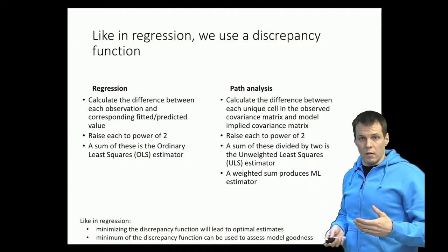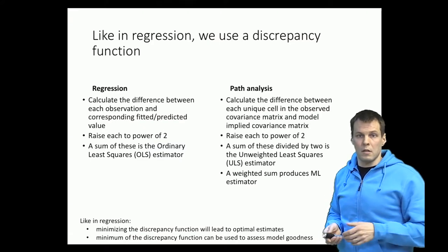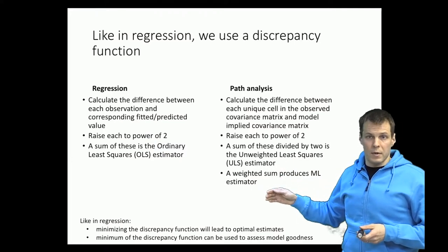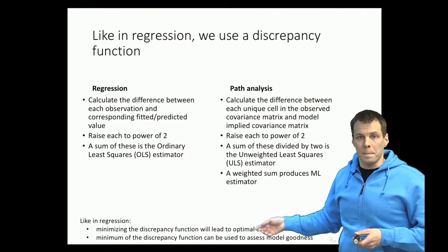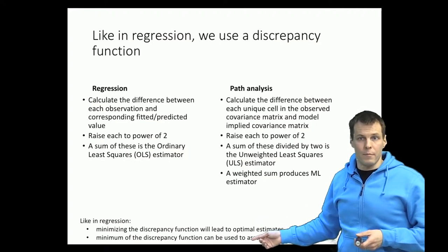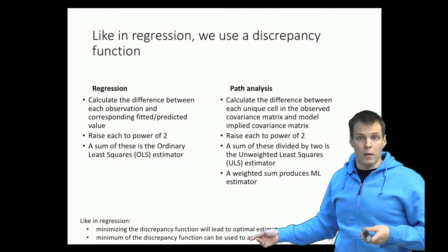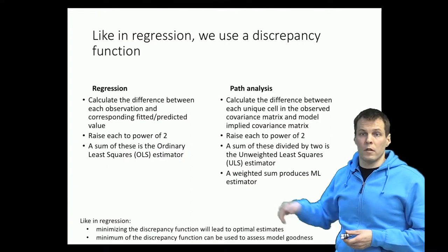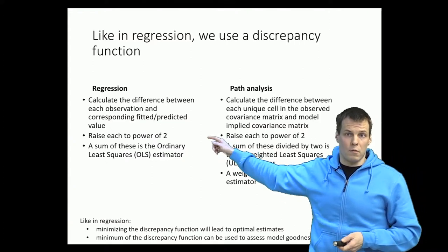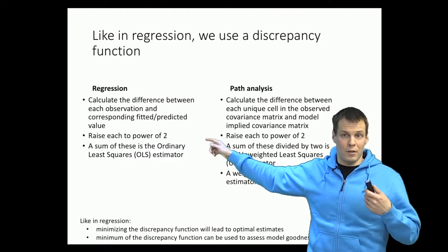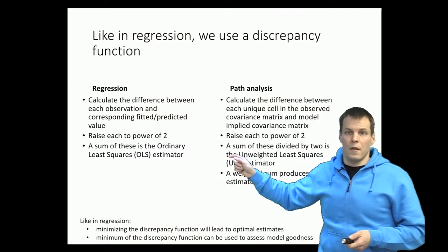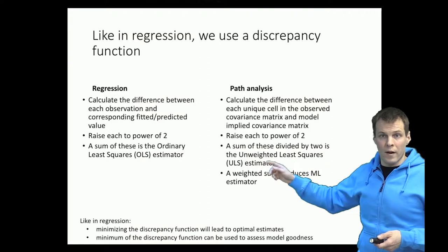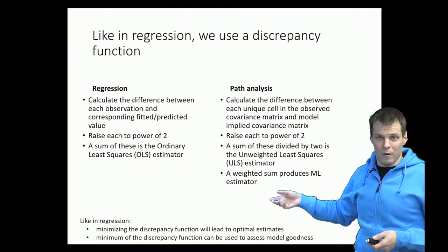There is another parallel between path analysis and regression analysis. Besides minimizing the discrepancy function to get ideal estimates, the discrepancy can quantify the goodness of fit of the model. In regression, one definition of R-square is based on the sum of squares: we calculate the sum of squares regression and compare it to the total sum of squares. Similarly here, the sum of squares of covariance errors can quantify model fit.